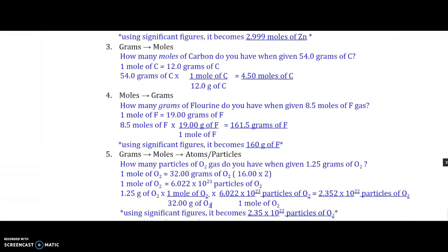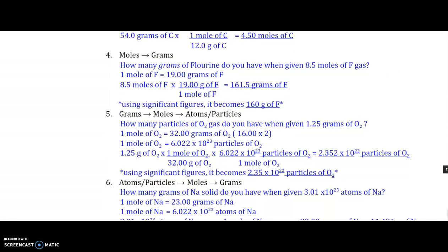Number four, you're going from moles to grams, the opposite direction. If I have 8.5 moles of fluorine, I know from my periodic table that I will have for every one mole of fluorine as my denominator, my numerator will be the atomic mass of fluorine of 19. That will give me the 161.5 grams of fluorine. Now, sig fig time. I have two sig figs in my problem of 8.5. So I will have to round that to 160.